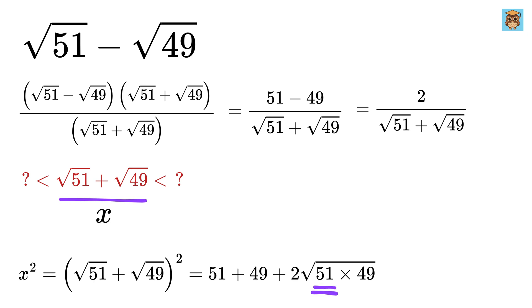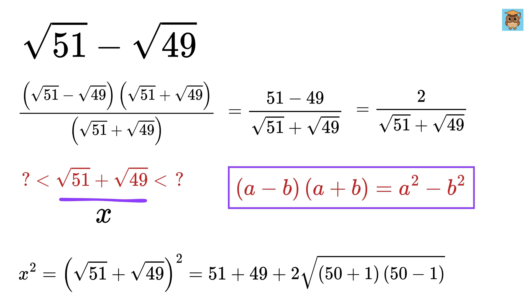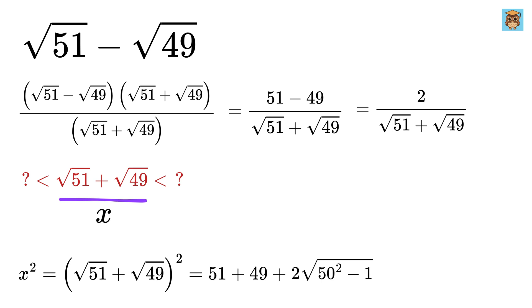Now 51 is 50 plus 1, and 49 is 50 minus 1. So using this formula again, we get this value as 50 square minus 1. So x square will be 100 plus 2 multiplied by square root of 50 square minus 1.